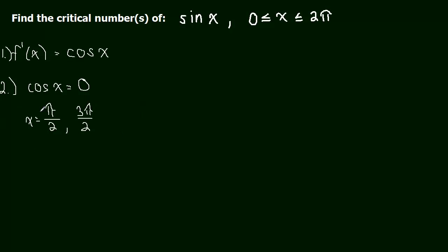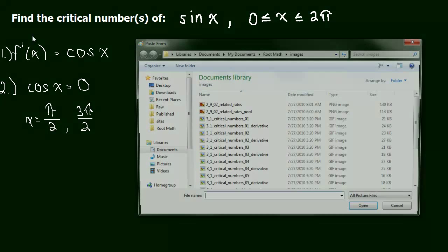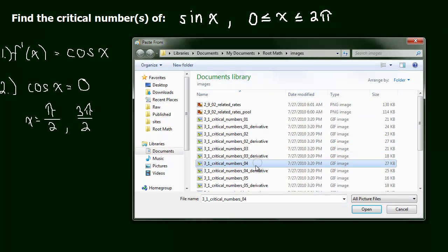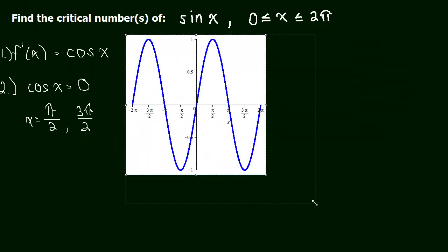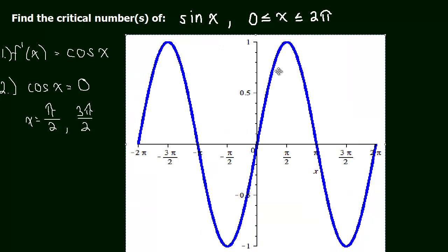Now that was easy enough. Finding critical numbers, hopefully if you've learned anything from these example videos, is not too hard. And now let's look at the sine function and see if that makes sense. So I have one too many intervals, or I went from negative 2π to 2π. Anyways, at π/2, we said that was a critical number, and 3π/2. And sure enough, those are our maximum point and our minimum point.